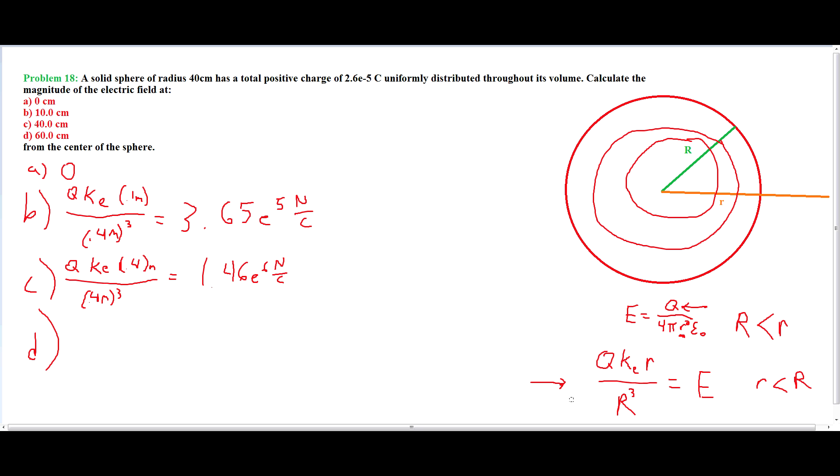we use this equation up here. And we do q divided by 4 pi r squared, which is 0.6 meters squared times the permittivity of free space, which is equal to 6.49 times 10 to the 5th newtons per coulomb. And there's all the answers.